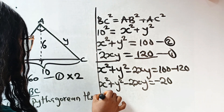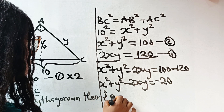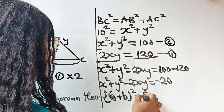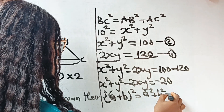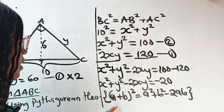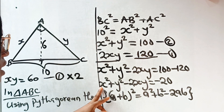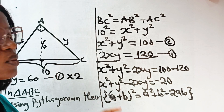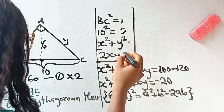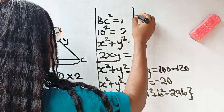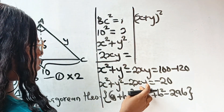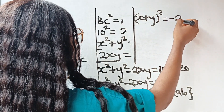Recall that (a − b)² = a² + b² − 2ab. So the left-hand side can be written as (x − y)². Therefore we have (x − y)² = −20.